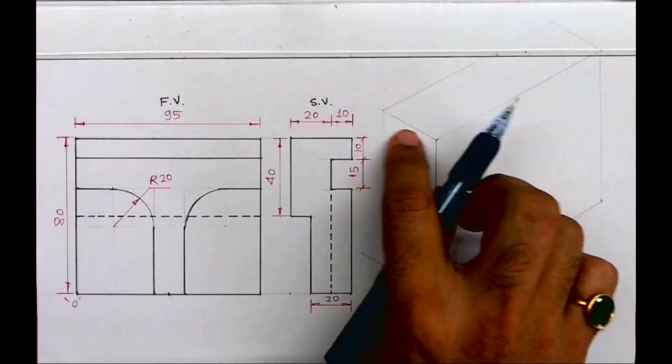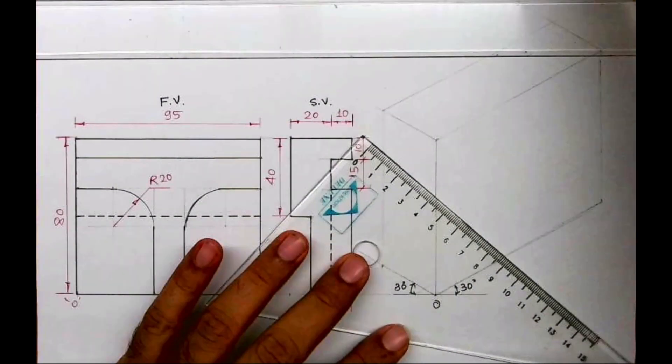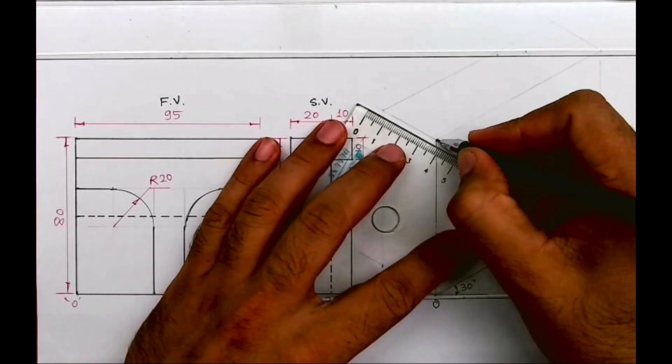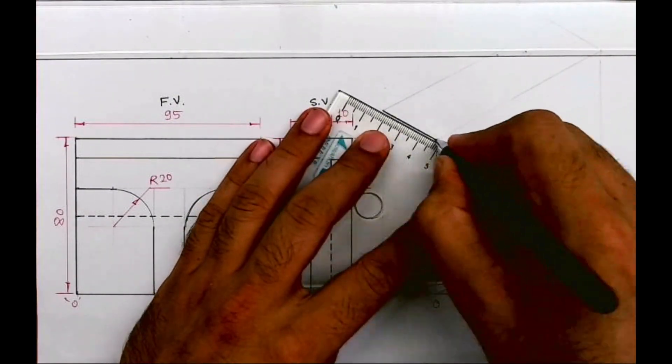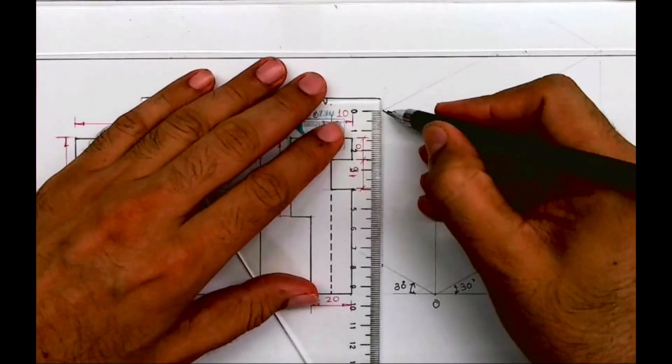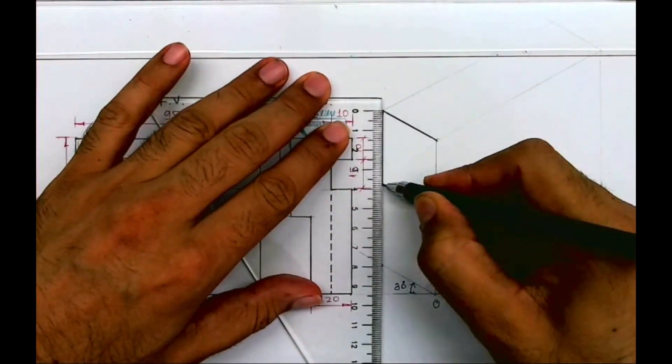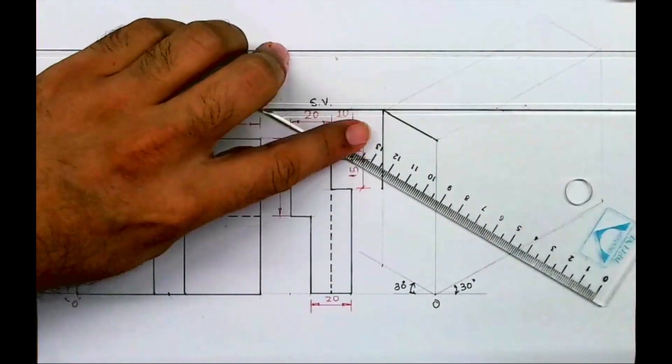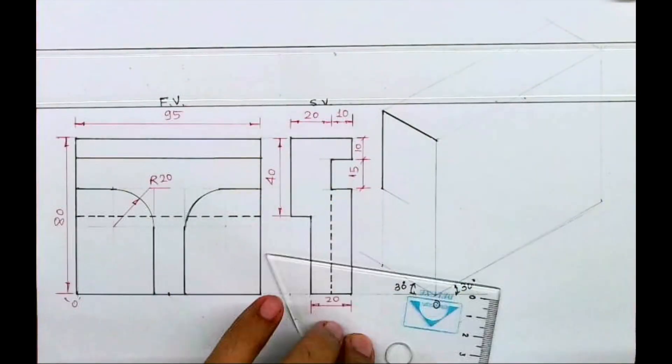Now if you see inside view, there is only one part, so we'll start with side view. So this is 30, then I'll go down by 40, then go inside by 10.